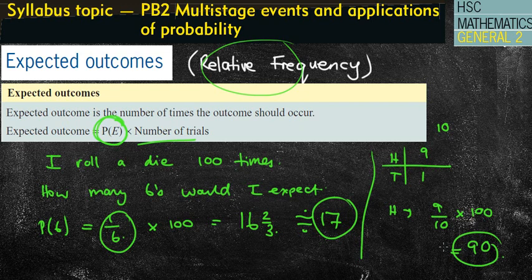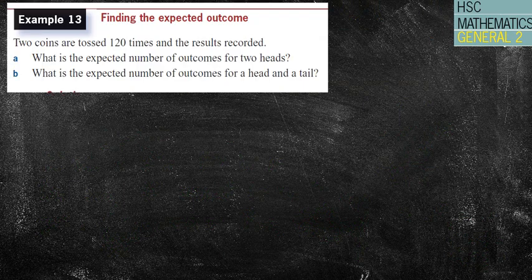So you can see expected outcomes is pretty straightforward — it's just finding the probability of the event occurring and then multiplying it by the number of trials. I have included one more challenging question, but most of it's pretty straightforward. Let's have a look at the first one.